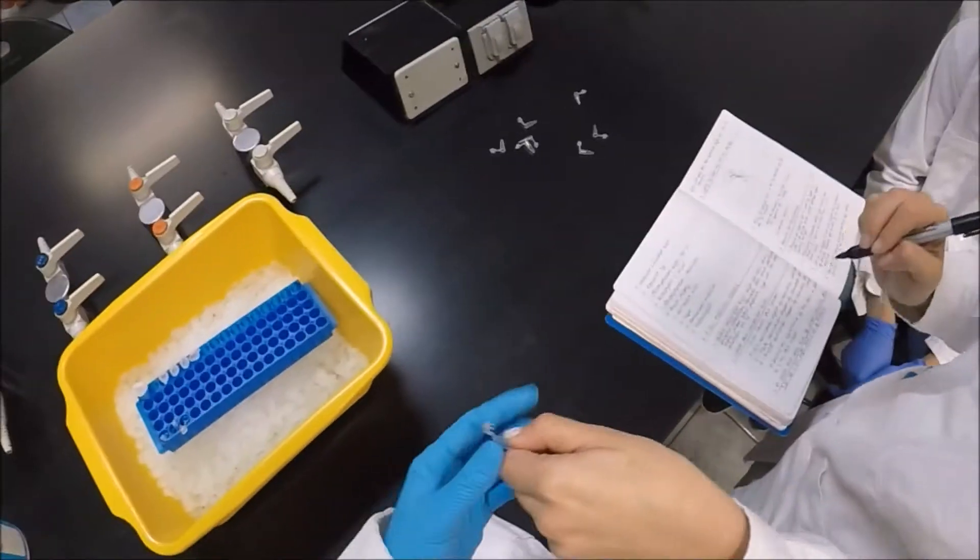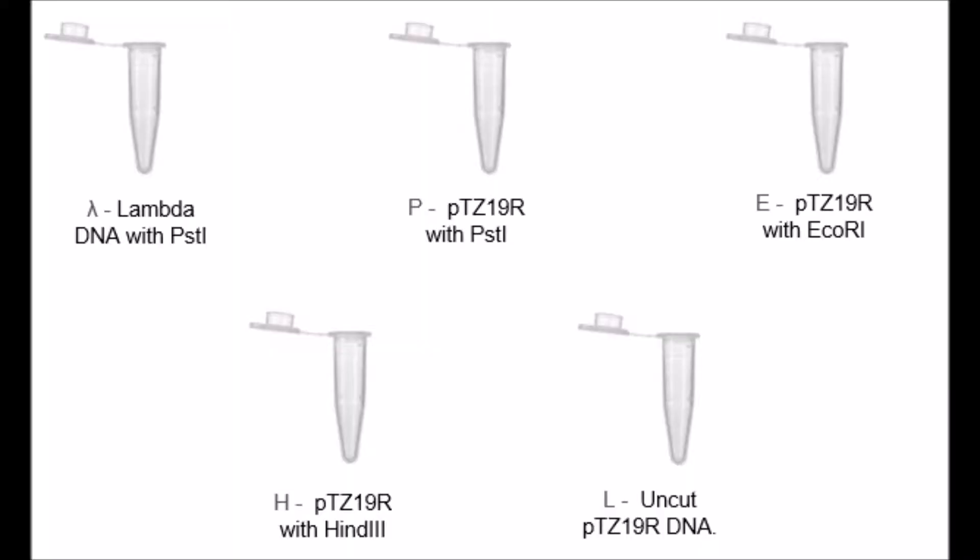Lambda, for the restriction digestion of lambda DNA with PstI. P, for the restriction digestion of plasmid with PstI. E, for the restriction digestion of plasmid with EcoRI. H, for the restriction digestion of plasmid with HindIII. L, for the uncut plasmid DNA.